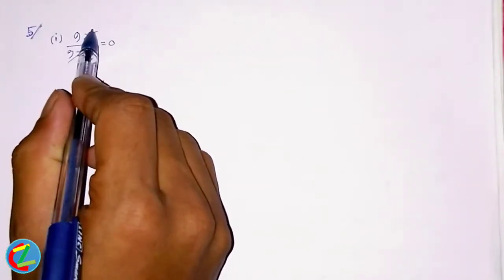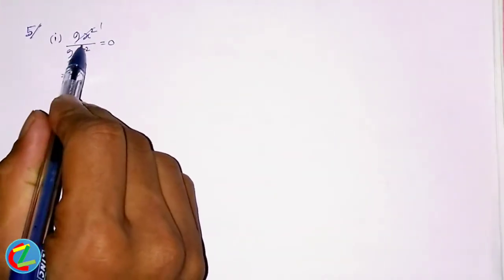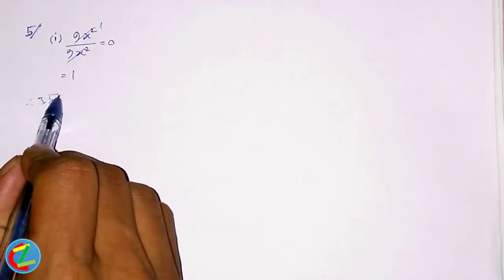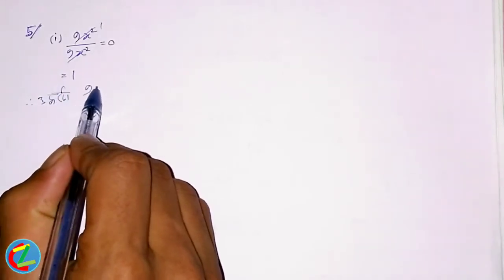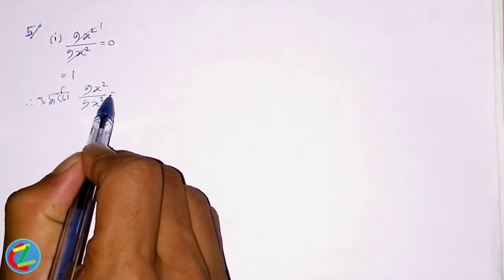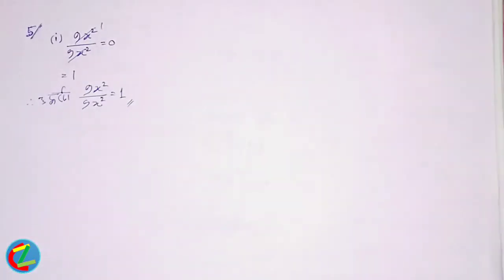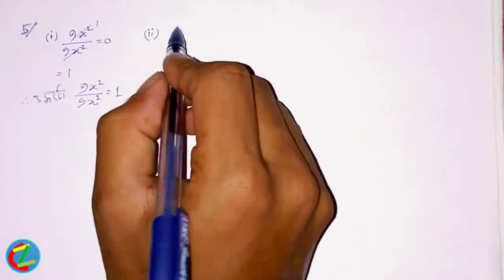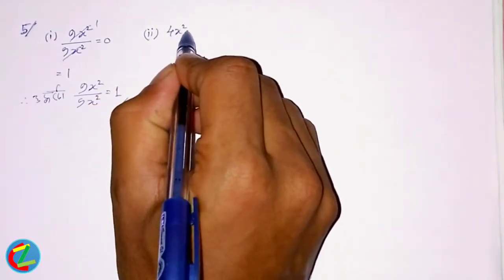The first one is 1, and you will find this 1. The two are equal to 2 and 1. The second one is 1. 9x² is 1. It's equal to 1. There are 2 numbers, and 1 is equal to 1 — we will write this one.